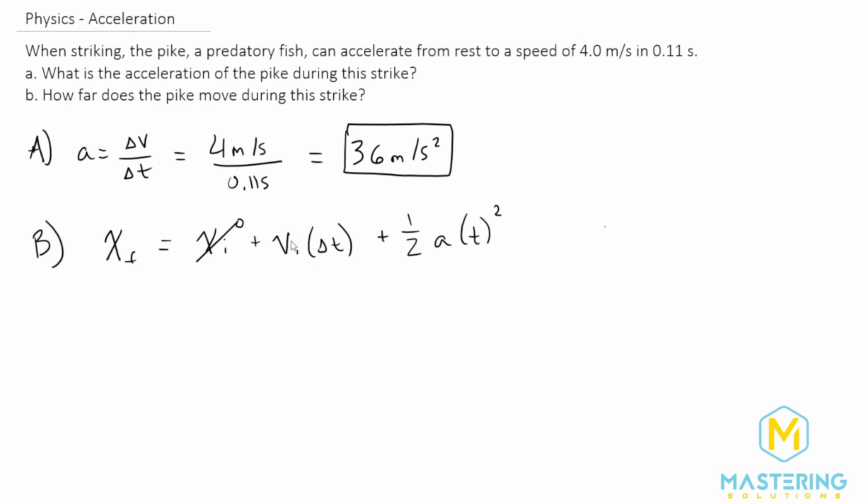The velocity initial is also 0, so we can get rid of this whole unit because 0 times anything is 0. So what we're left with is the x final, which is what we need to solve for, is equal to 1 half times the acceleration times the time squared.